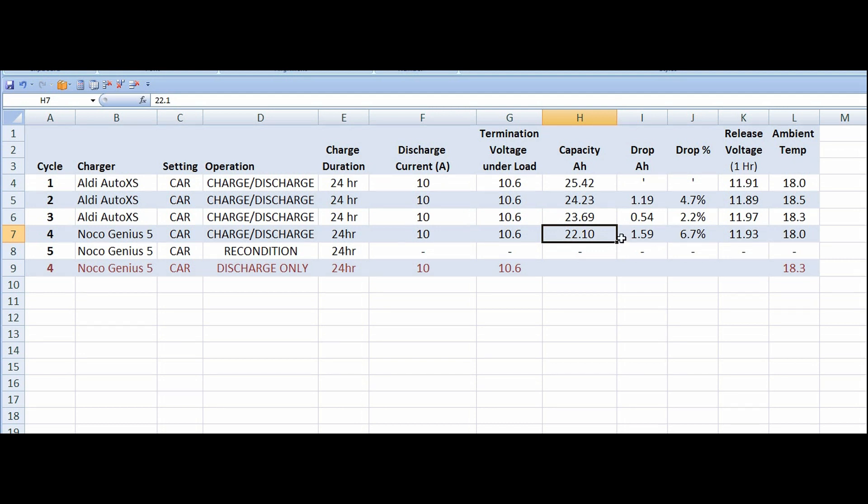Now, so we've done those tests and you can see 22.10. So any improvement over 22.10 after the reconditioning cycle, which we're on at the moment, would show that reconditioning of one cycle of reconditioning has some effect. If we see 21.5 or 20, it's had no effect. If we see 21.5 or more, then it would be okay. But if we saw something significant increase here, then we know the reconditioning charge, the reconditioning cycle from the NOCO Genius 5 had actually done us some good.